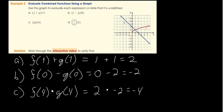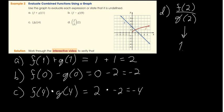For d, f over g of 2 — that's f of 2 divided by g of 2. Looking at f of 2, it looks like about 1.4. But g of 2 appears to be 0. So d is undefined, since we cannot divide by zero.